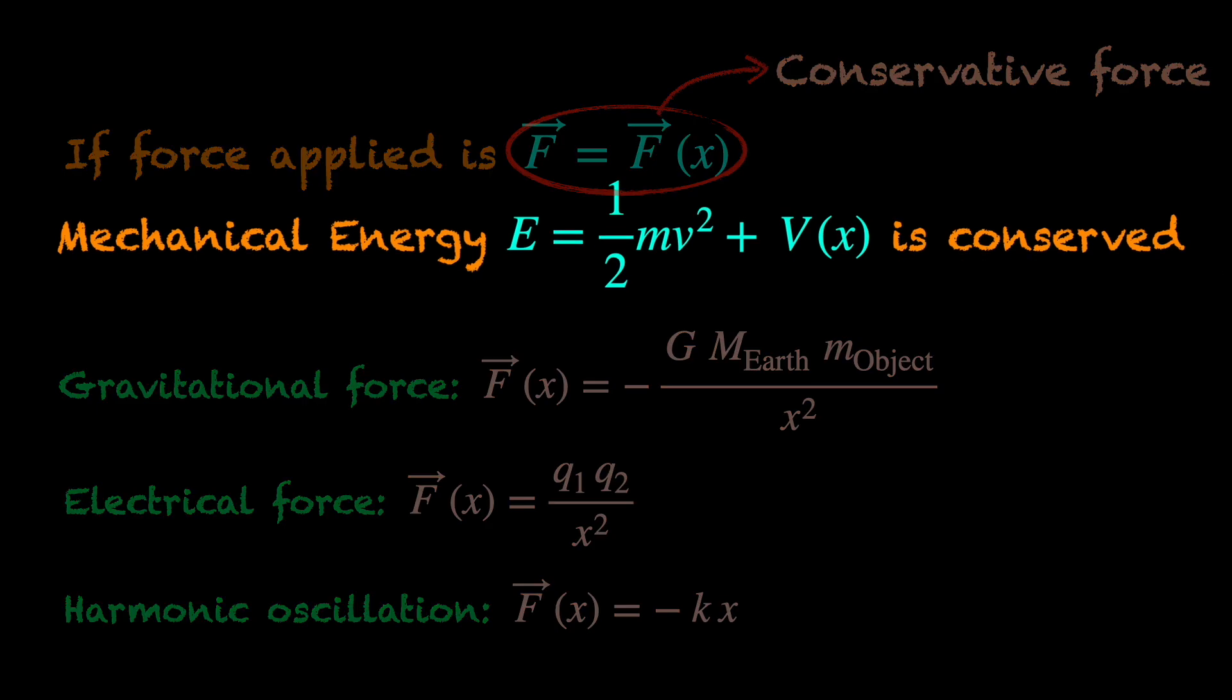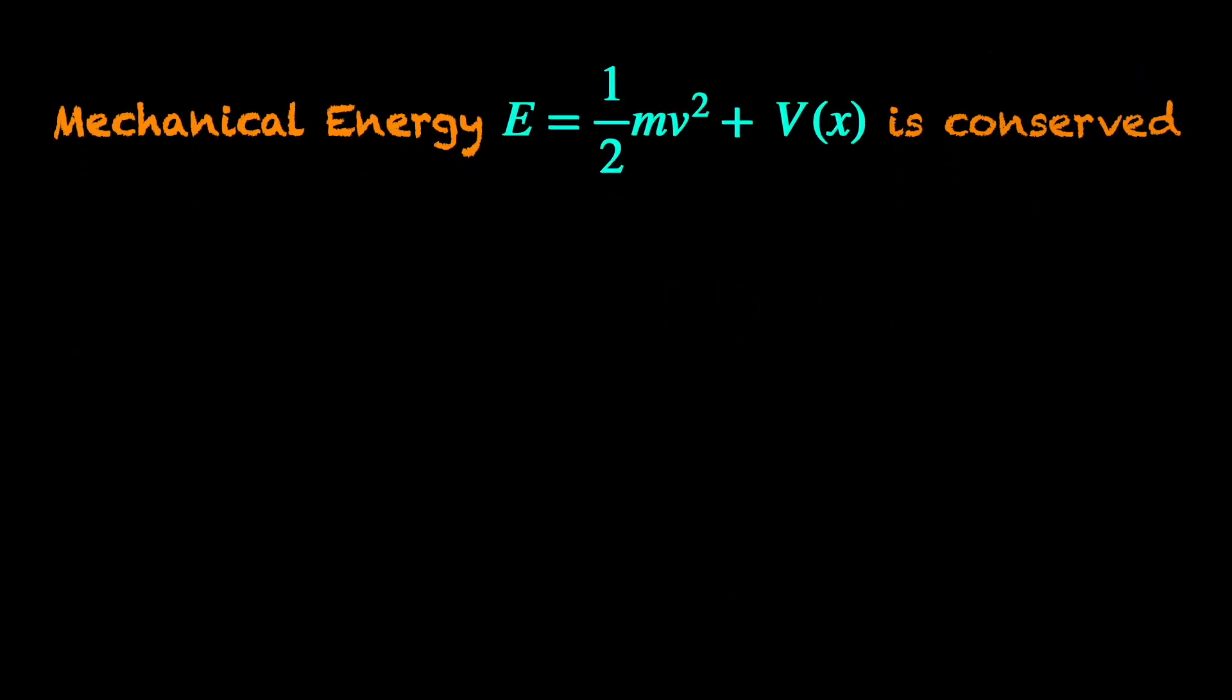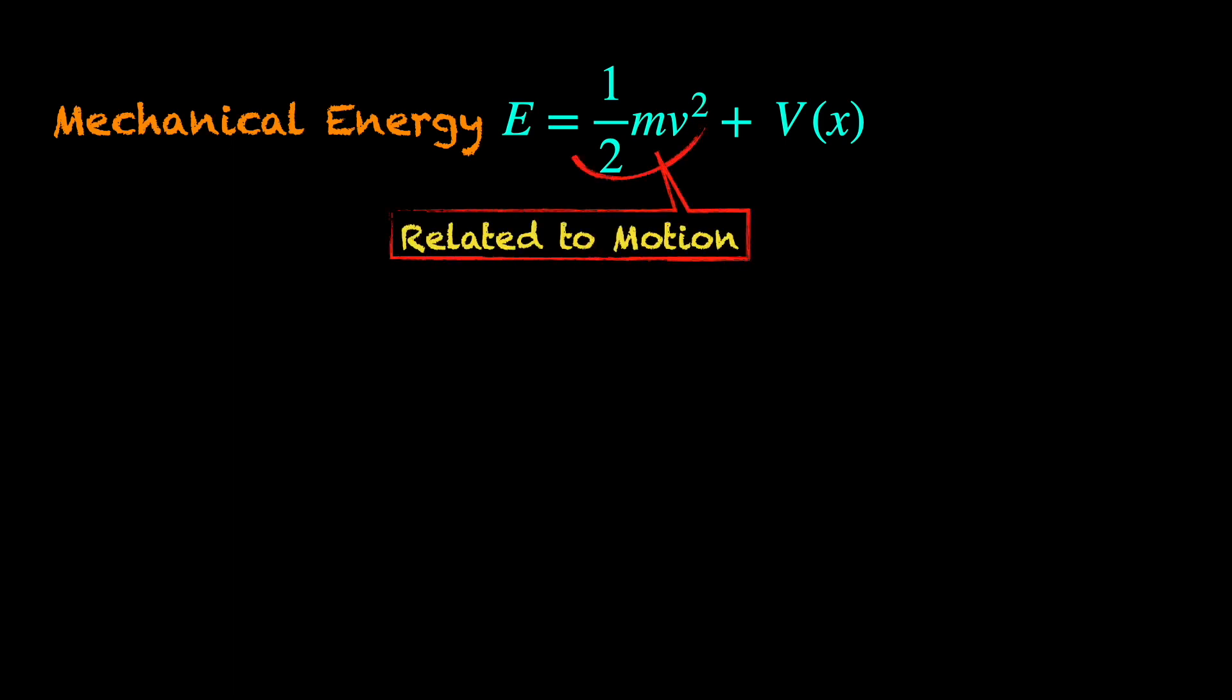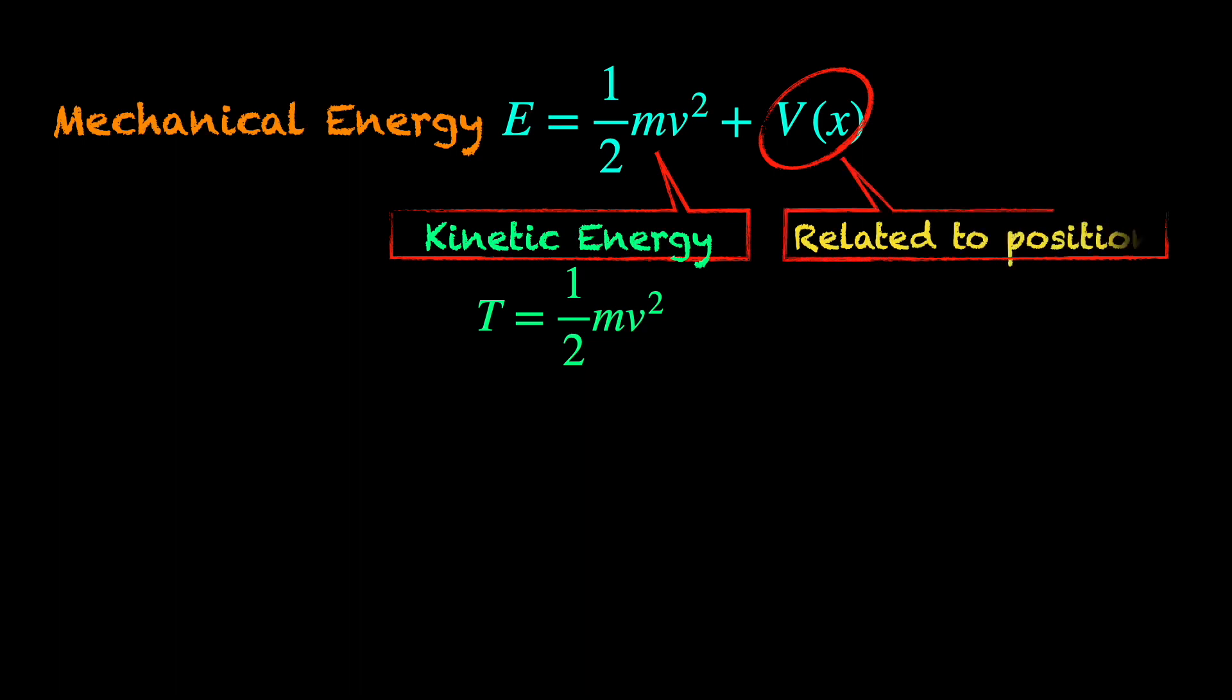You can see that the mechanical energy of the object has two parts. One related to the motion of the object given by the velocity squared term. This is called the kinetic energy T and the other, the function v of x depending only on the position of the object, is called the potential energy.